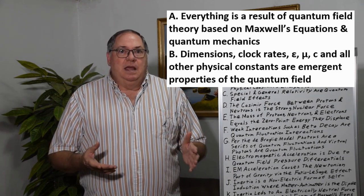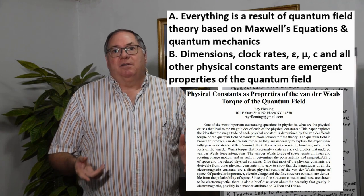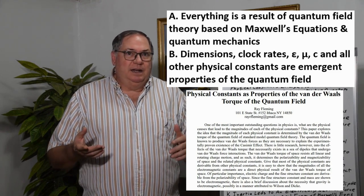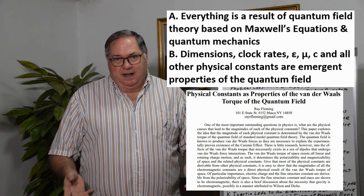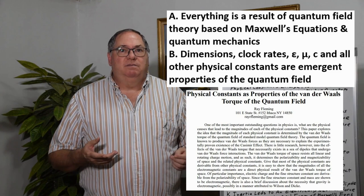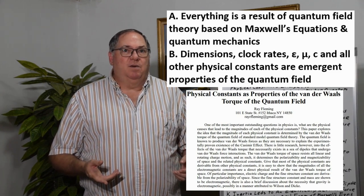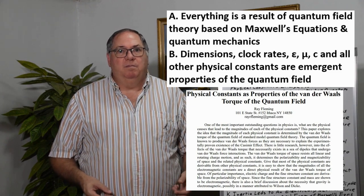To begin with, we can understand that dimensions, clock rates, permittivity, permeability, the speed of light, the fine structure constant, Planck's constant, the electric charge are all emergent properties of the quantum field. All physical constants emerge from the quantum field.